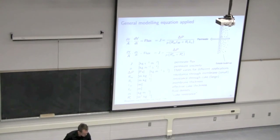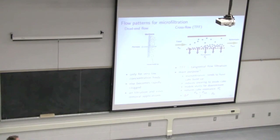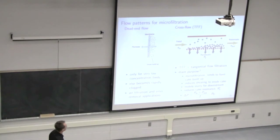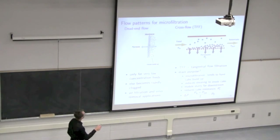What we saw yesterday included some key definitions. We contrasted dead-end flow — the filtration we've seen up to this point — where we have a regular filter barrier and the cake is doing most of the work, filtering the permeable parts. In the previous part of the course we called that the filtrate. In membranes, we call it permeate. It's the same thing — filtrate or permeate leaving.